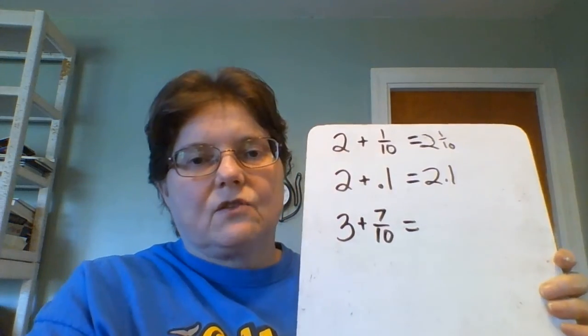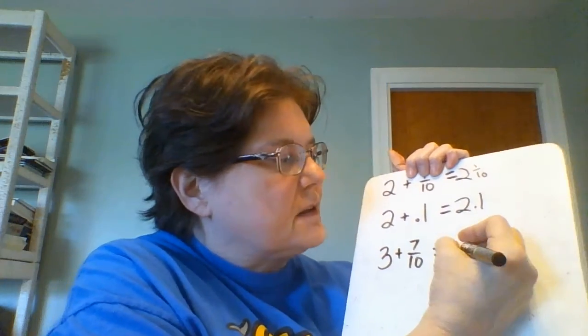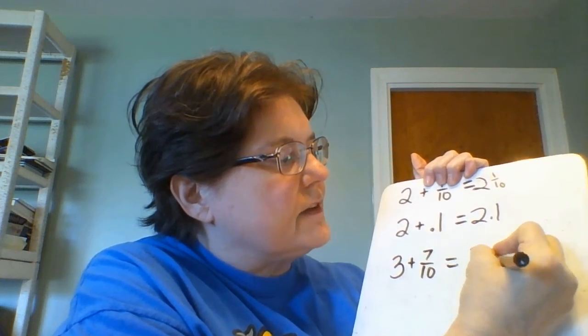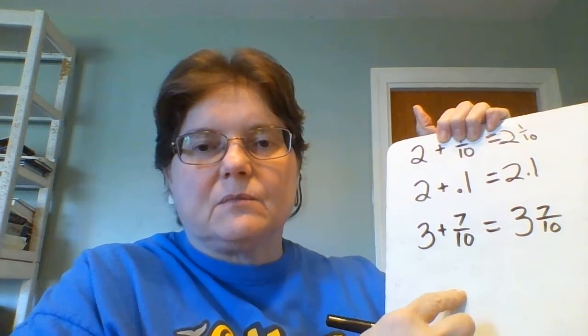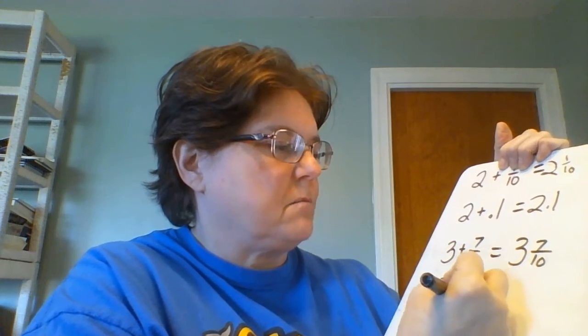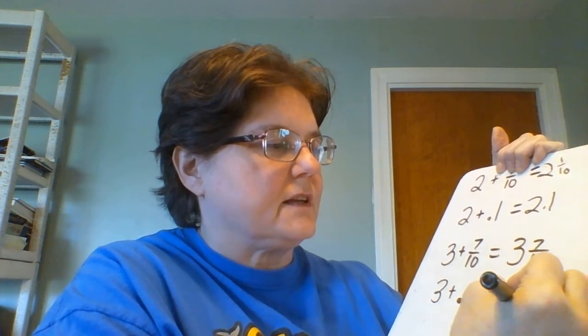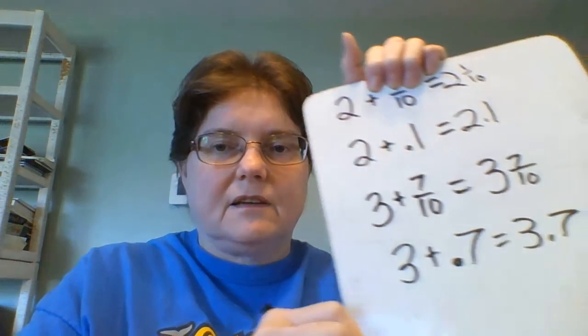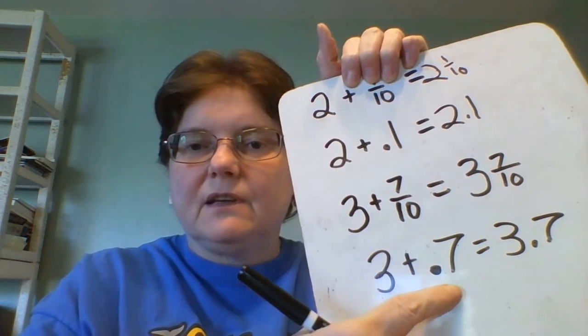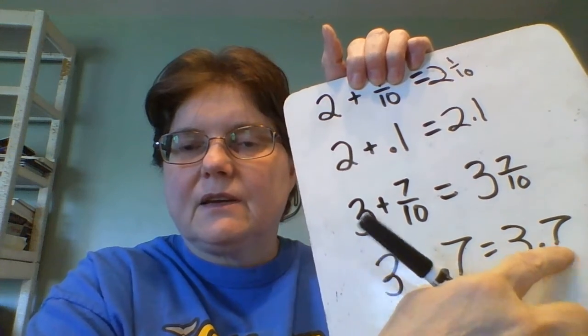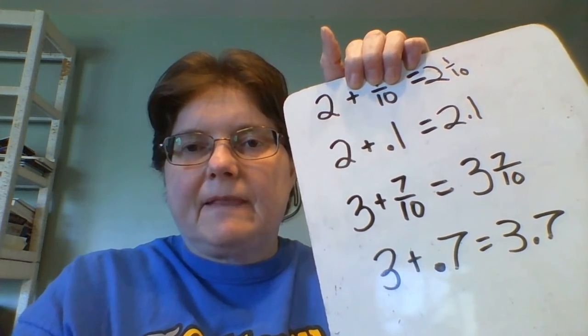Now, let's do a couple more mixed numbers. 3 plus 7 tenths equals 3 and 7 tenths. We write it as a decimal: 3 plus 0.7 equals 3.7. You see how that works?